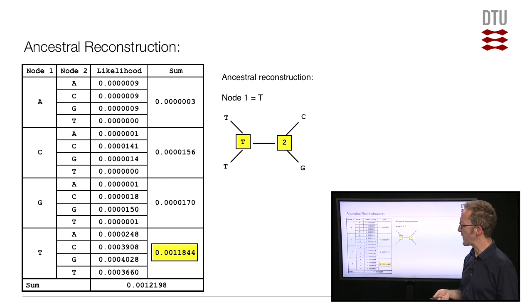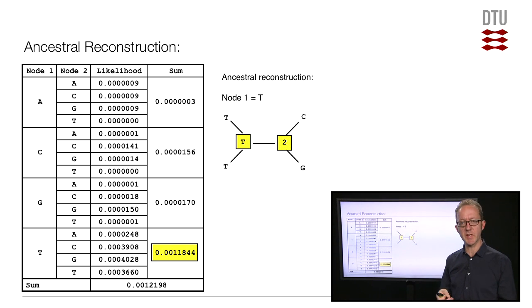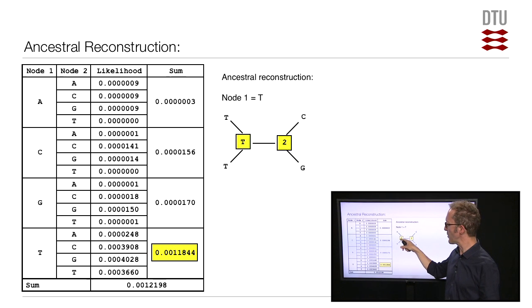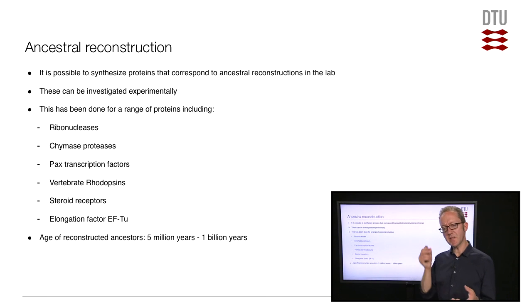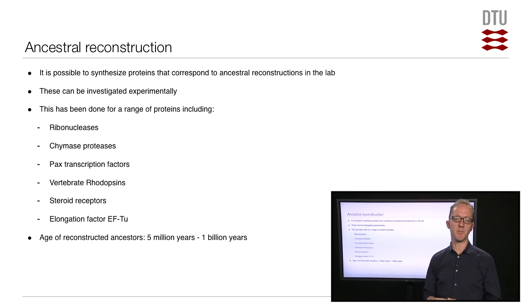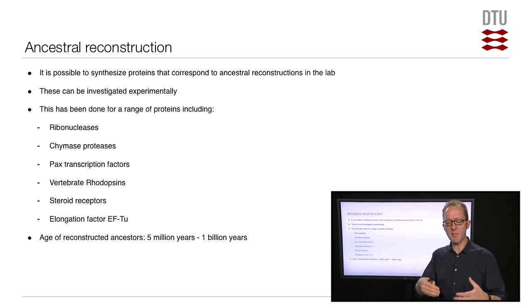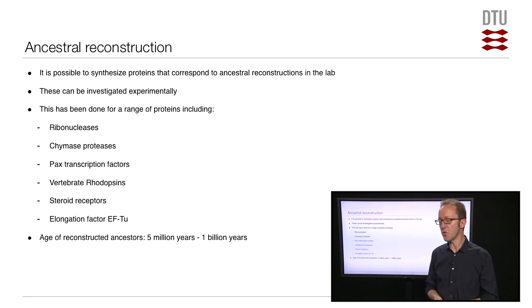It's tens of thousands of times more likely than having had an A at this particular position. Doing this type of thing, it's possible for any given ancestral node in a phylogenetic tree to go through it position by position, and for each position get a probability distribution over the possible nucleotides, and even pick the most likely nucleotide at each position. Doing that, it's actually possible to reconstruct entire ancestral sequences — for instance, how a particular protein or enzyme looked in the ancestor of all vertebrates, or the ancestor of all proteogamma bacteria.